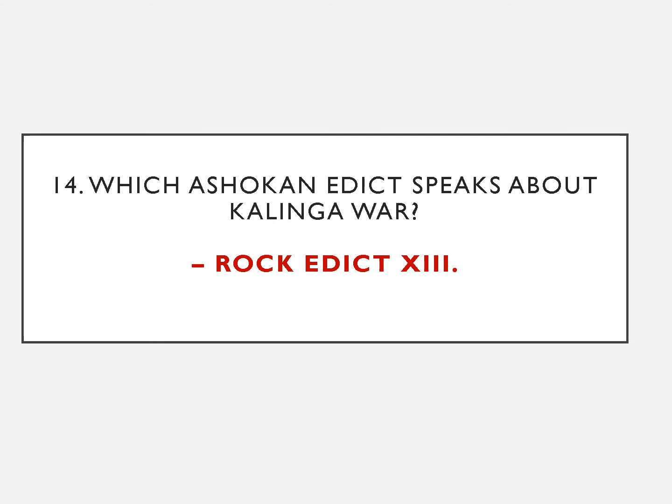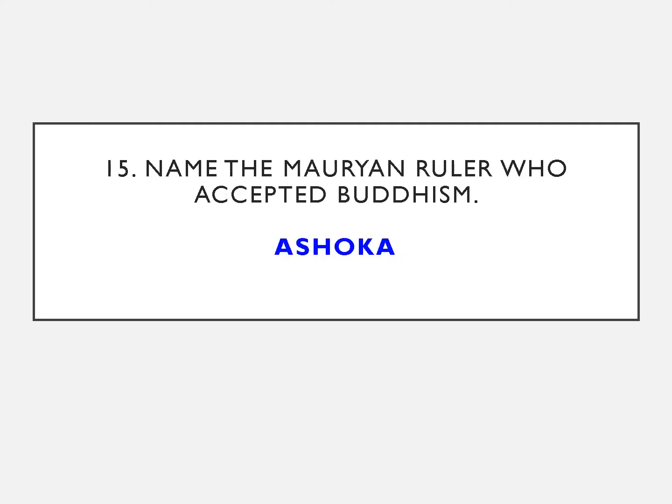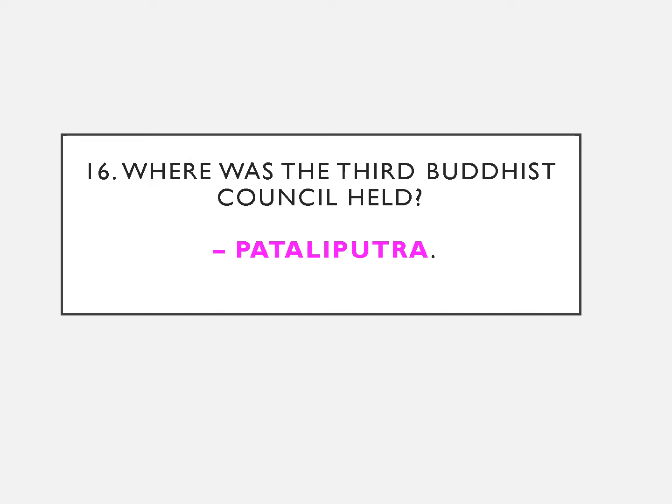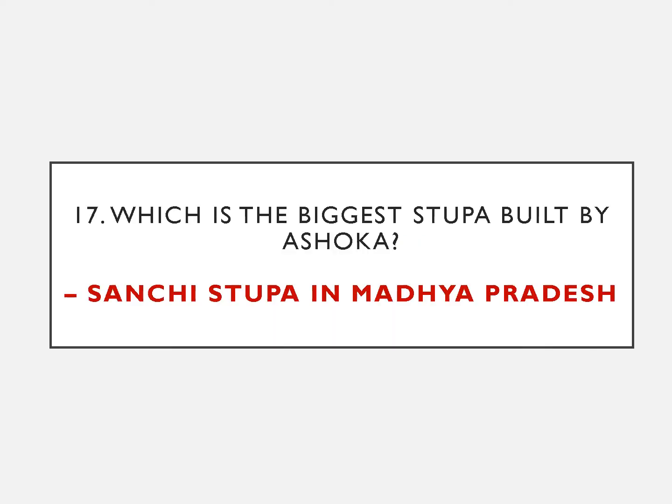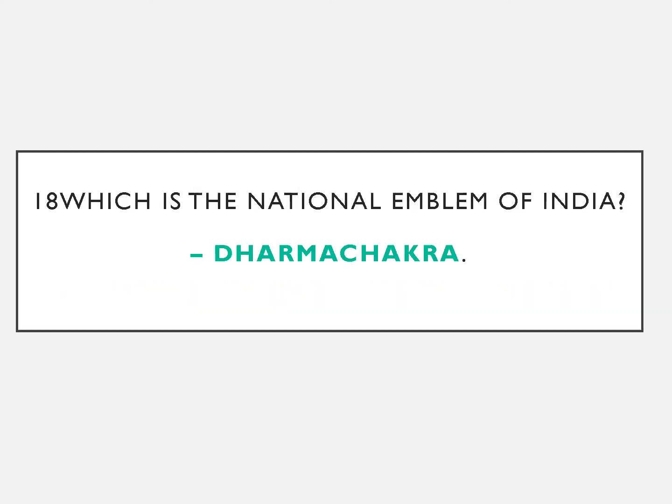Which Ashokan edict speaks about the Kalinga war? The answer: the Thirteenth Rock Edict. Name the Mauryan ruler who accepted Buddhism. The answer: Ashoka. Where was the third Buddhist council held? The answer: Pataliputra. Which is the biggest stupa built by Ashoka? The answer: Sanchi Stupa in Madhya Pradesh. Which is the national emblem of India? The answer: Dharma Chakra.